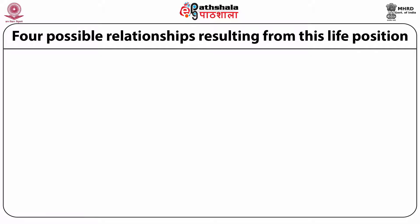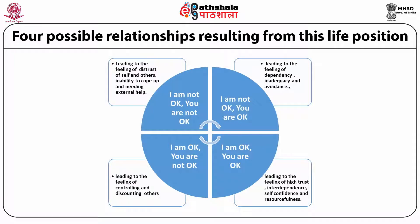The four possible relationships resulting from the life positions are: first, I am not okay, you are not okay — this quadrant leads to the feeling of distrust of self and others where there is an inability to cope and need for external help. Second, I am not okay, you are okay — leading to the feeling of dependency, inadequacy, and avoidance. Third, I am okay, you are okay — leading to the feeling of high trust, interdependence, self-confidence, and resourcefulness. Fourth, I am okay, you are not okay — leading to the feeling of controlling or discounting others.